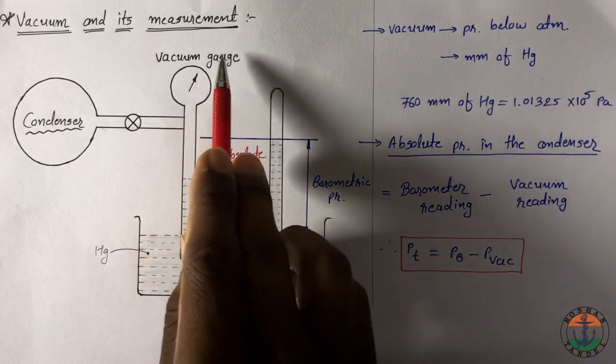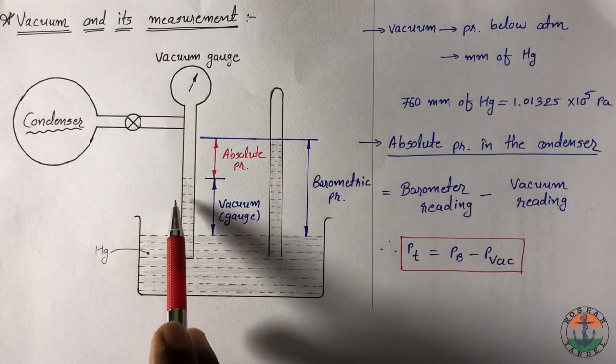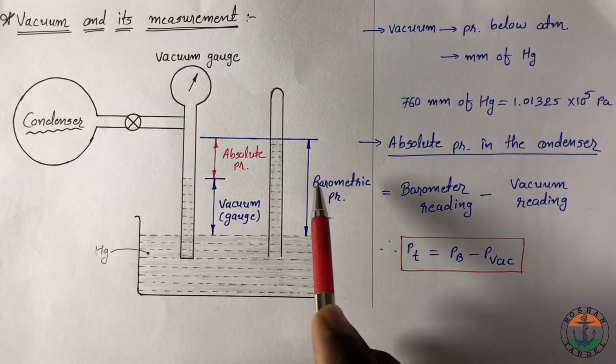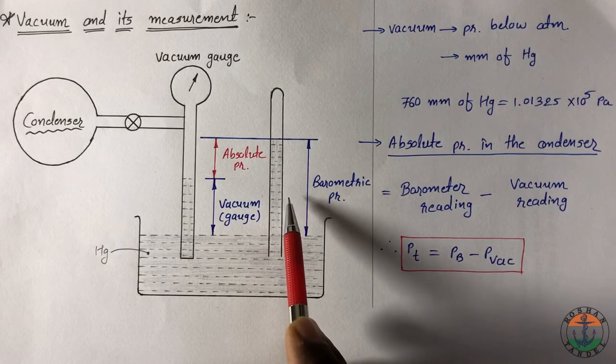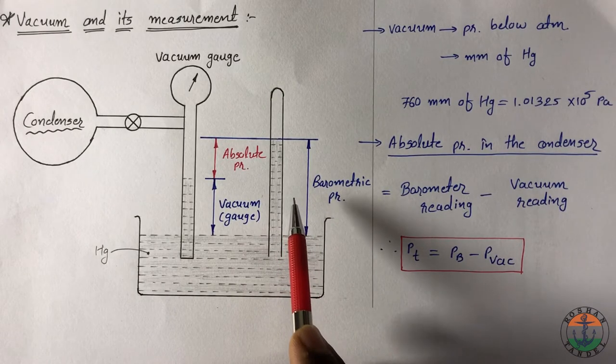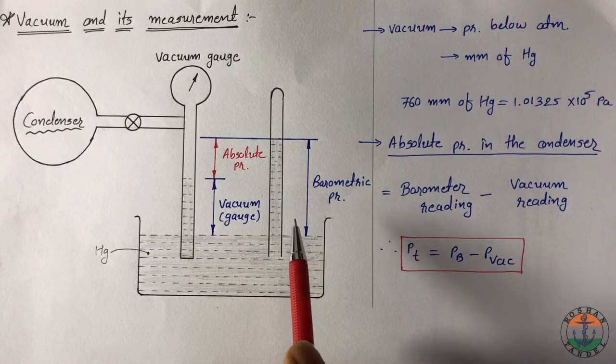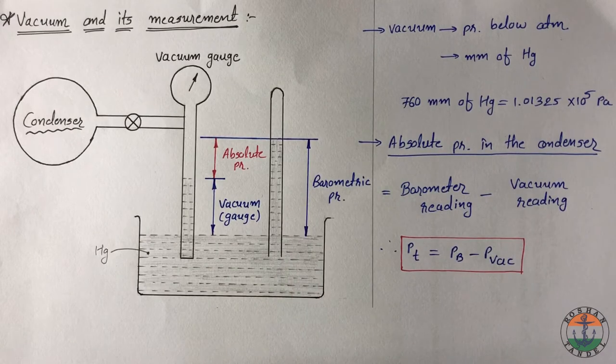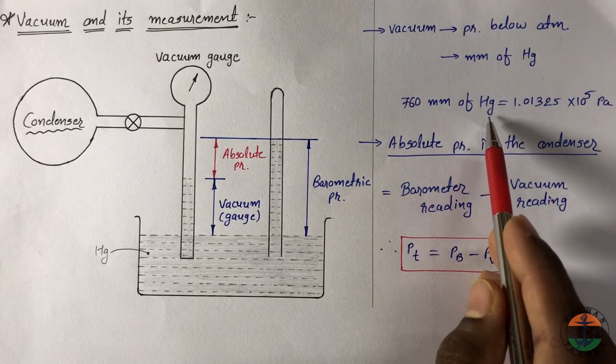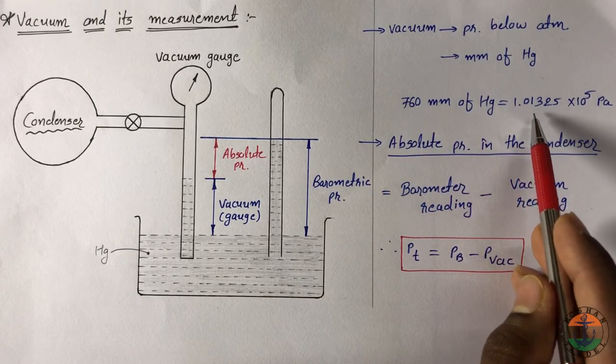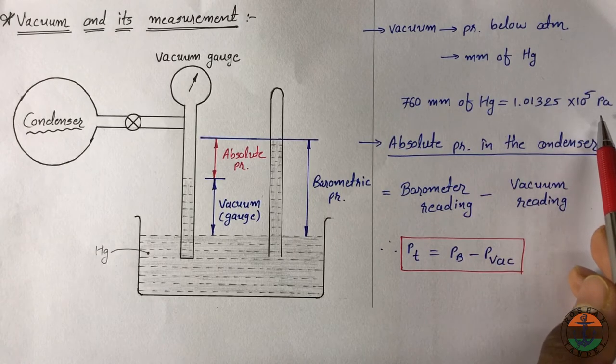Vacuum is measured by vacuum gauge as shown in this figure. Atmospheric pressure is measured by barometer. This reading changes slightly based on altitude from sea level. But in most of the cases, standard atmospheric pressure is considered as 760 mm of Hg which is equal to 1.01325 × 10^5 Pascal.